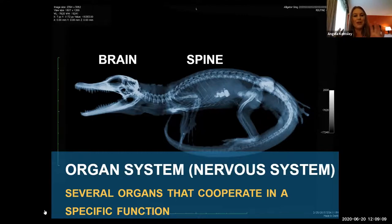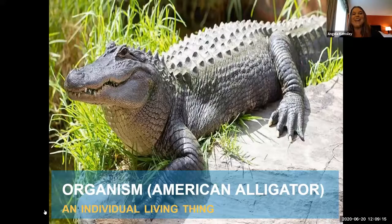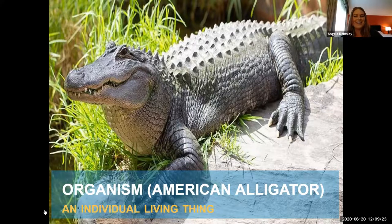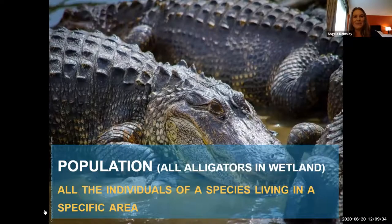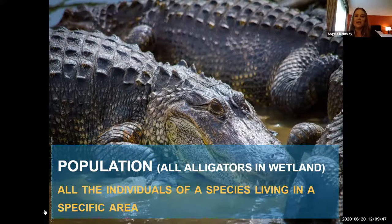When you put a bunch of different organ systems together, they finally make an organism — an individual living thing, an animal, a plant, algae. In our example, did you guess it? We're at the American alligator. If you put a bunch of organisms together, that makes a population — all the individuals of one species that live in a specific area. Our example is all of the alligators that live in this specific wetland.